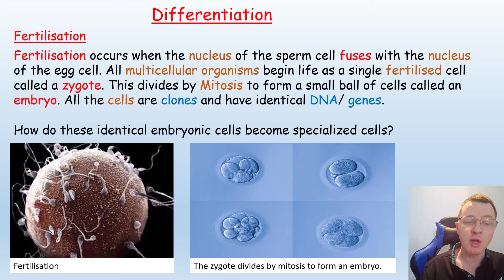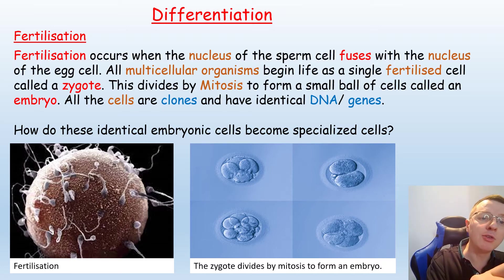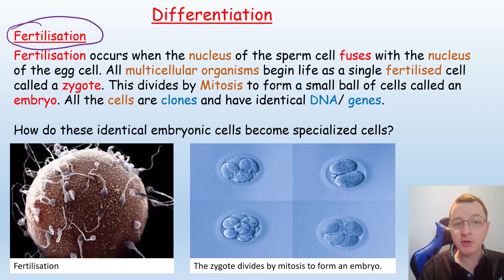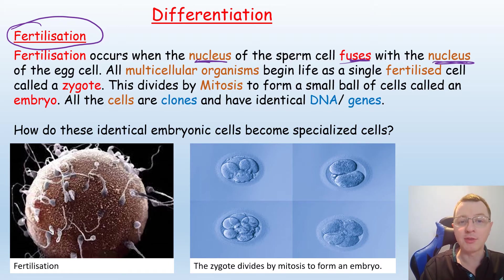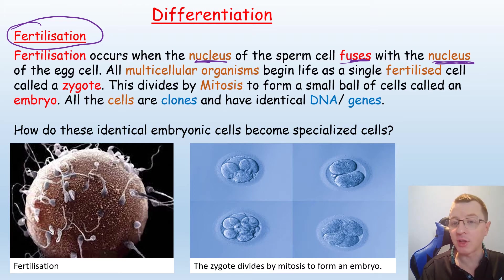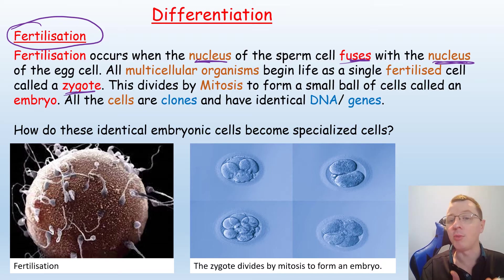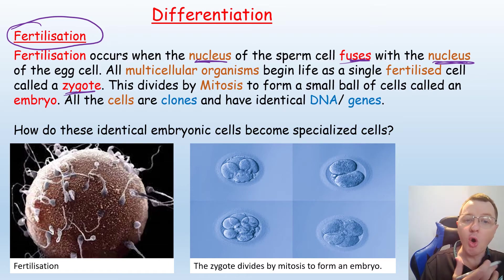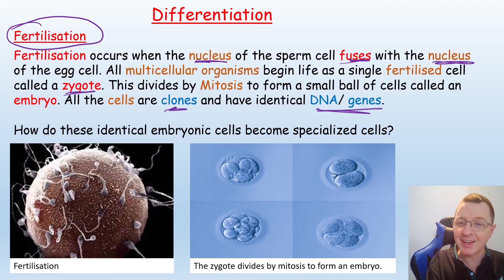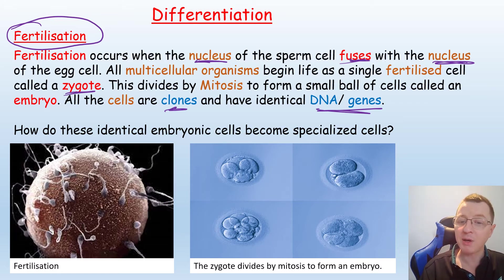To answer that question, we have to think about how a multicellular organism is created. The first process is fertilisation, which occurs when the nucleus of a sperm cell fuses with the nucleus of an egg cell. All multicellular organisms begin life as a single fertilised cell called a zygote. This zygote will then divide by mitosis to form a small ball of cells called an embryo, and all the cells in the embryo are clones of each other with exactly the same DNA and genes.